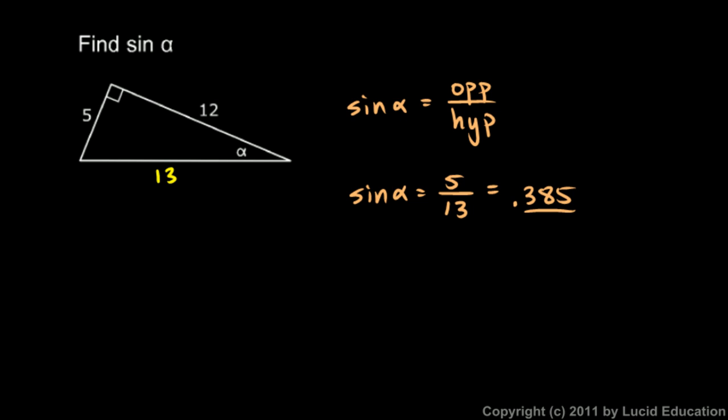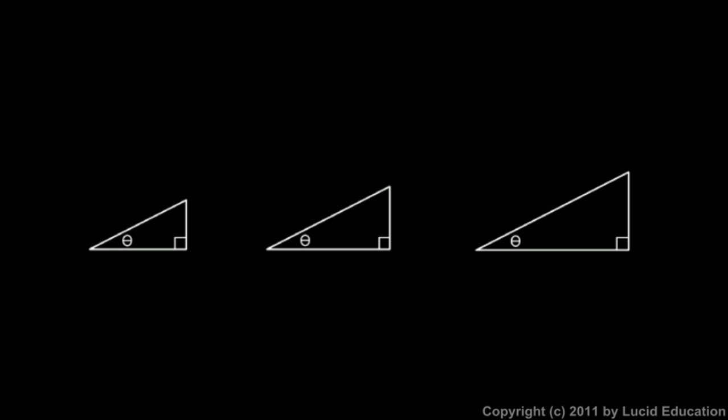And one more comment about the sine function that should make sense to you. Here, look at these three triangles. These are all similar triangles - they're just different sizes but they're all the exact same shape. One is just a different scale than the other. In all three cases there's an angle marked theta, and then you can see that the ratio of the opposite side over the hypotenuse will be the same for each triangle. As long as the angle doesn't change, that ratio doesn't change.